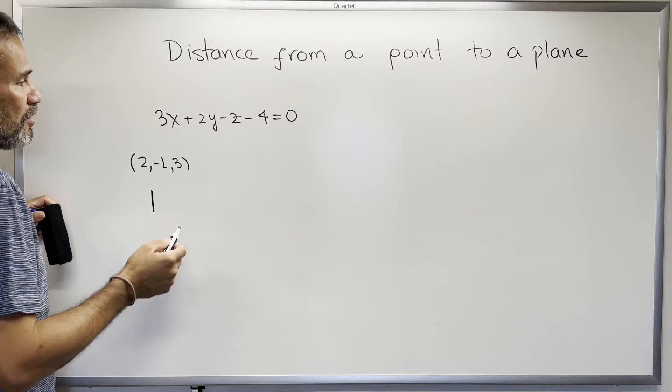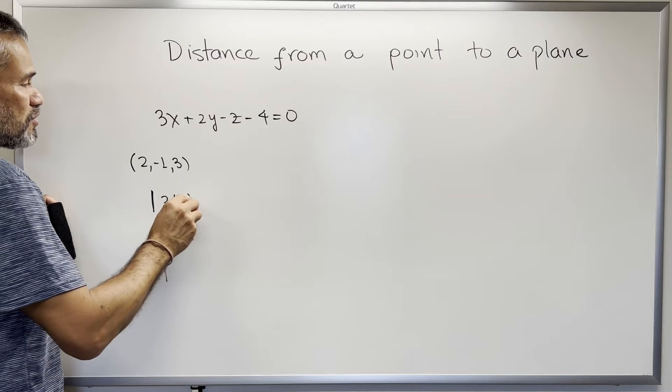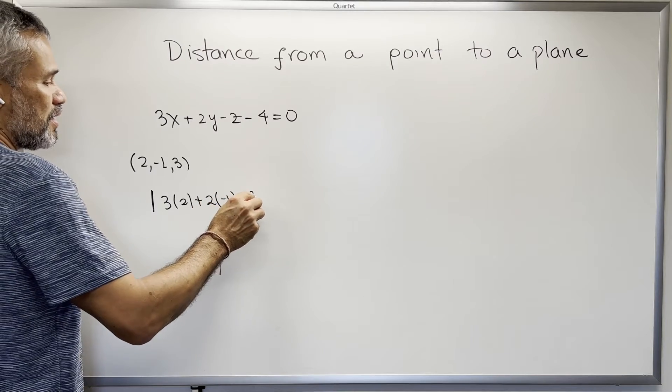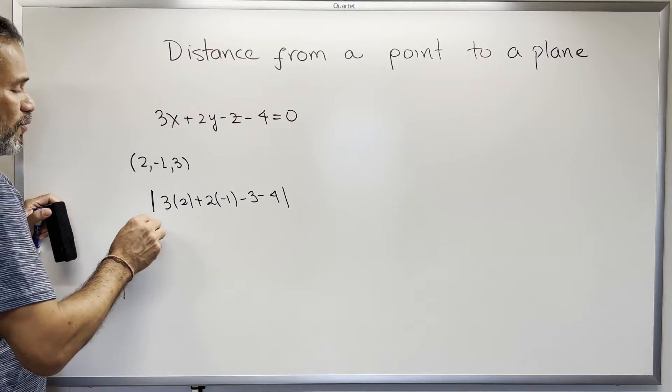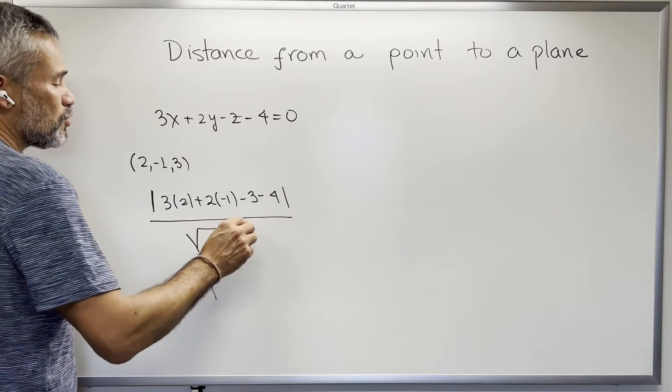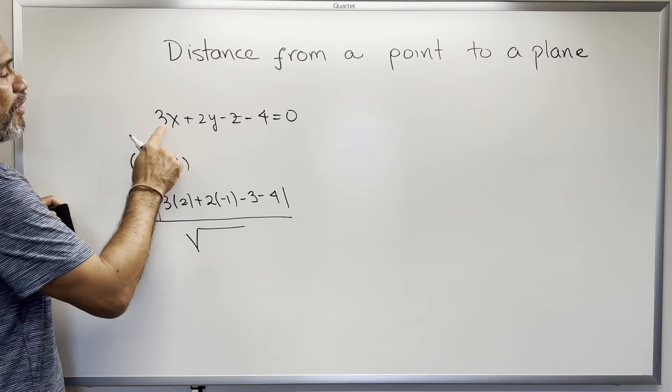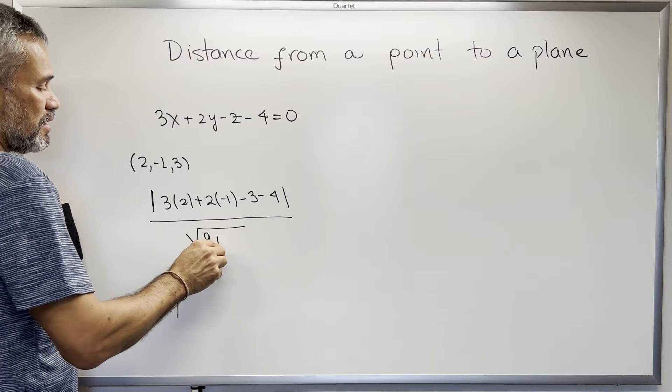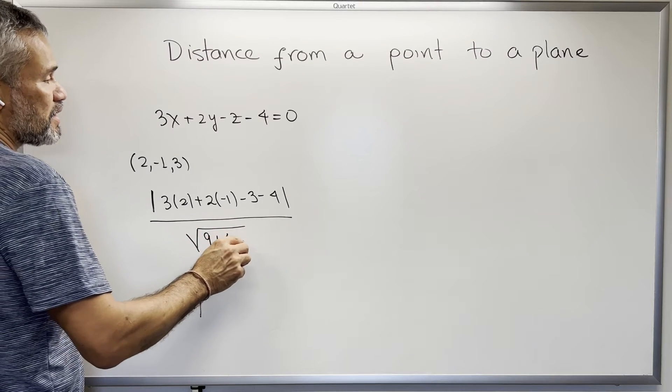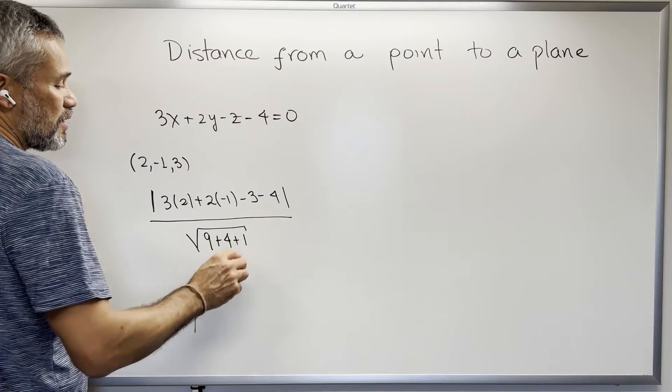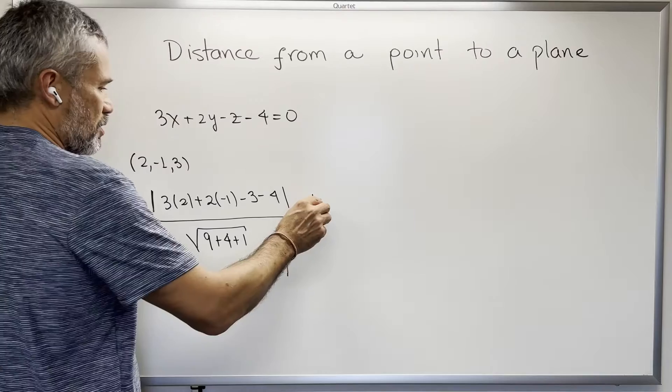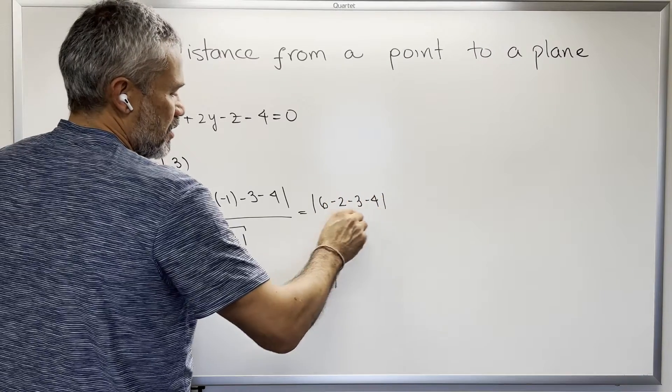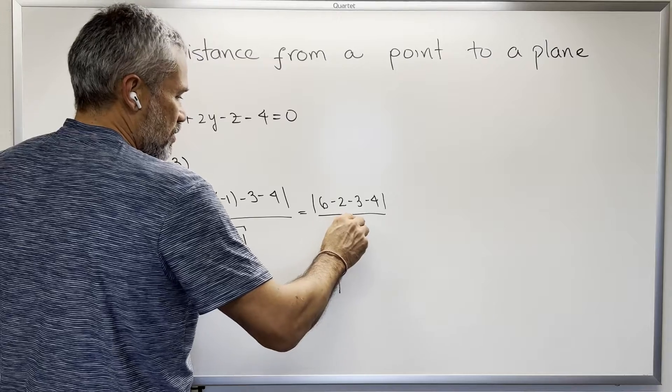And we do the absolute value of the left hand side of this equation. Then we get 3 times 2 plus 2 times negative 1 minus 3 minus 4, and then we divide this by the square root of the square of the coefficients: the coefficient of x, the coefficient of y, the coefficient of z. Then we have 3 squared is 9, plus 2 squared is 4, plus negative 1 squared is 1. Then the answer will be 6 minus 2 minus 3 minus 4 over the square root of 14.